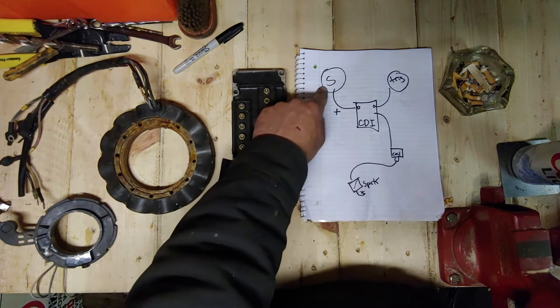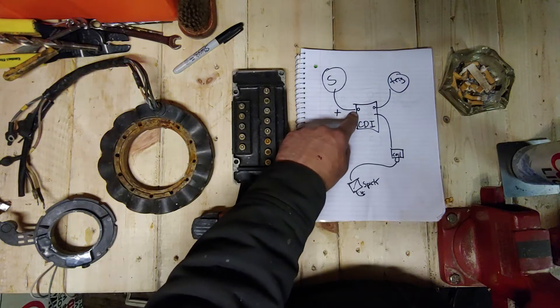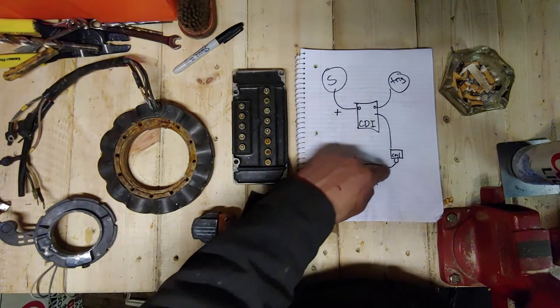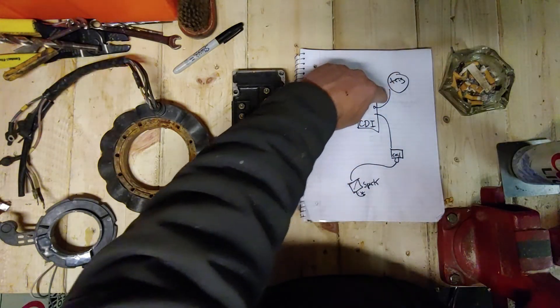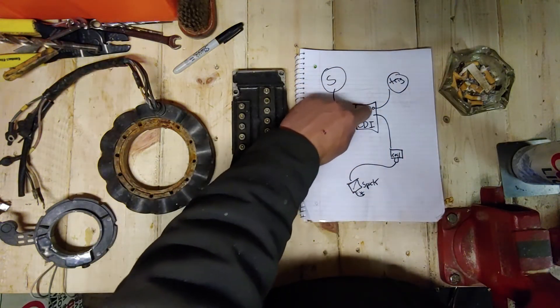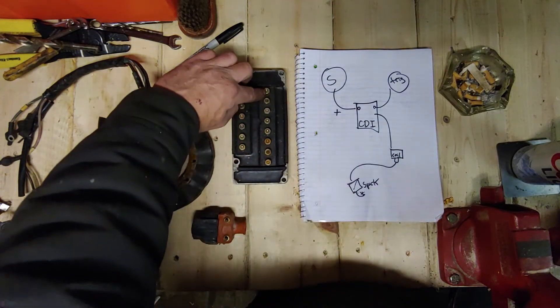Stator, the alternator, making voltage into the CDI box. CDI box wants to release the power to the spark plug via coil, but it can't unless the trigger says that it's at top dead center for a particular cylinder and a particular coil.